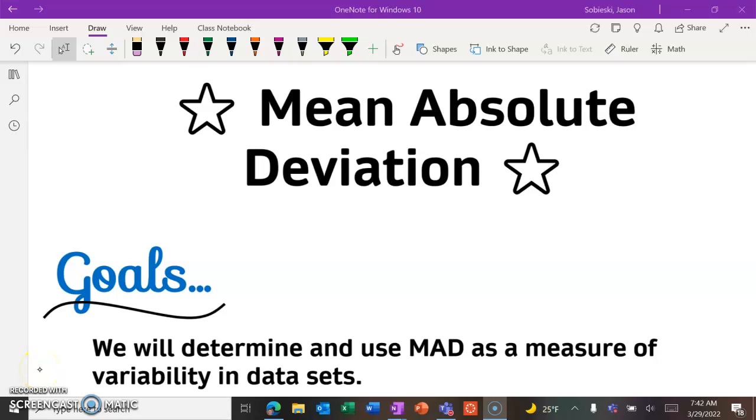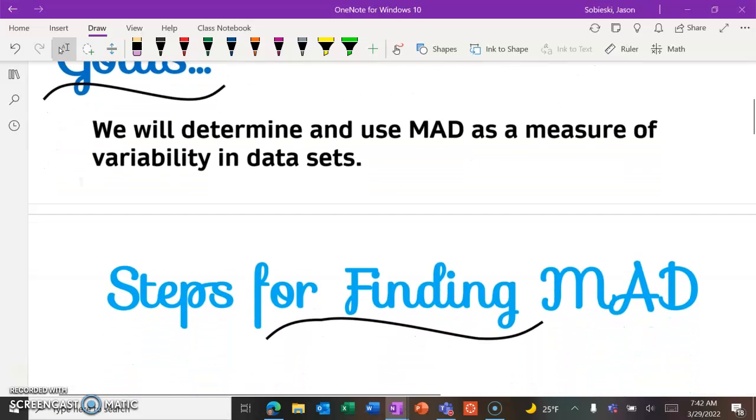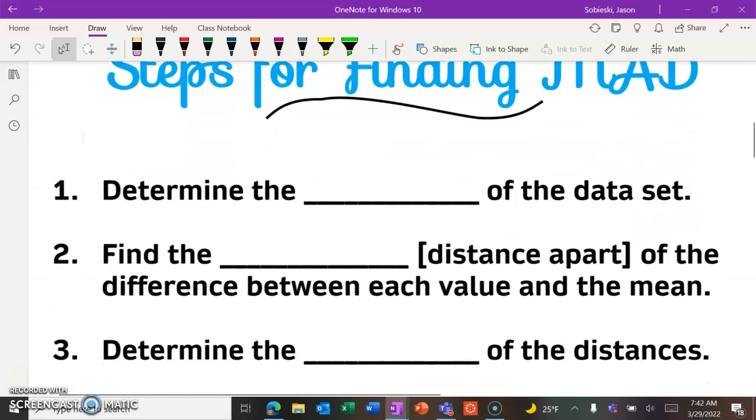Hey everybody, so in this video we're going to be learning about Mean Absolute Deviation, or MAD, which is a measure of variability that we can use in data sets.